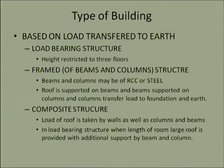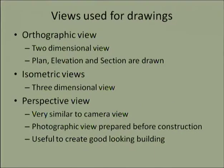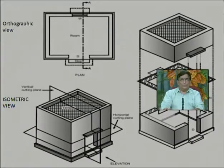Then we identified the civil engineering drawing — what is the drawing, the importance of the drawing, why drawing is necessary. We identified the necessity of the drawing, what is the civil engineering drawing, and which are the different views drawn for it. That is the orthographic view, then isometric view, then perspective view. In the isometric view, if we cut by the horizontal section and draw the top view that is the plan, and if we cut with a vertical section and draw the front view that is called the sectional elevation.